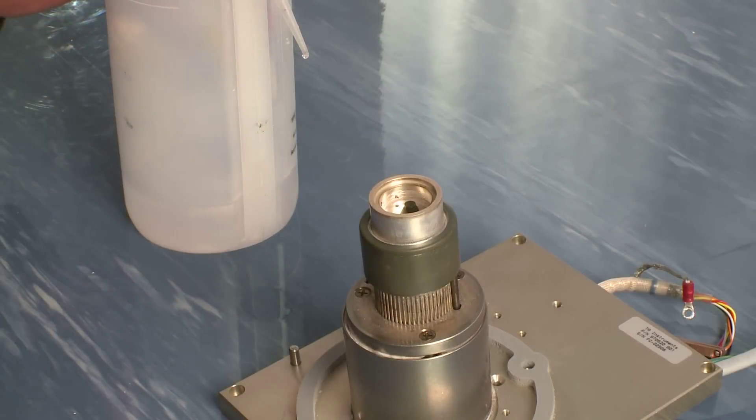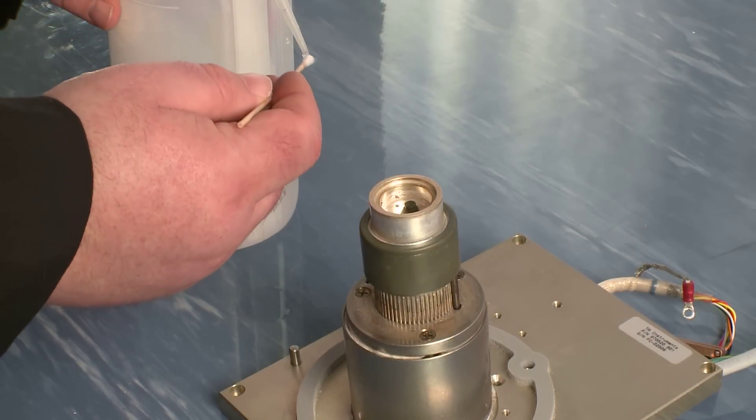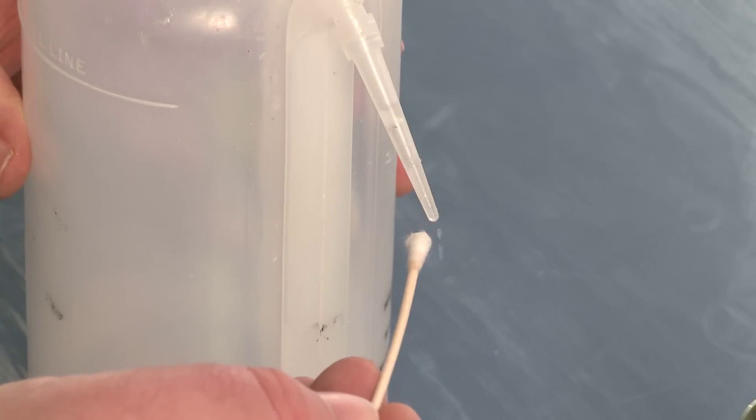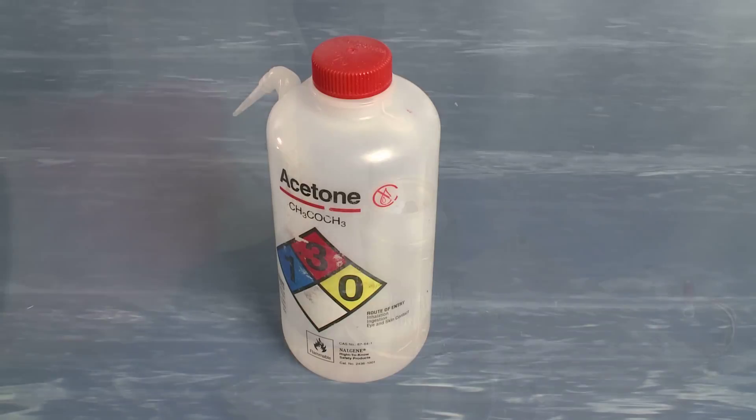Sometimes contaminants can be more persistent and the brush may not remove it completely. If this is the case, we suggest using a cotton swab moistened with a mild solvent to remove the contaminant. You can use acetone, alcohol, or hexane as a first pass.